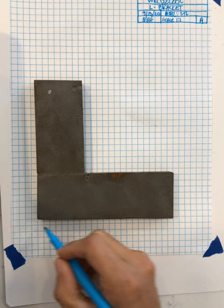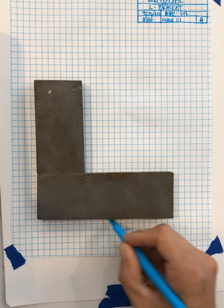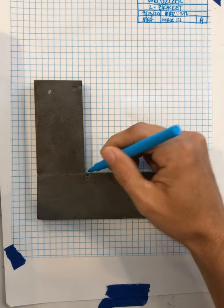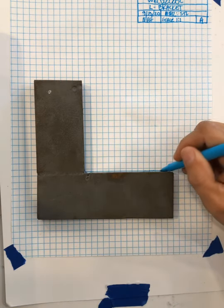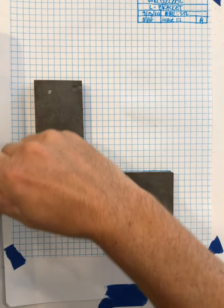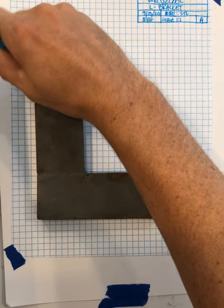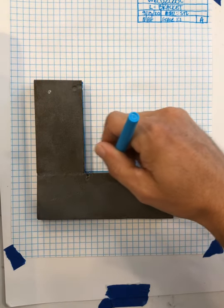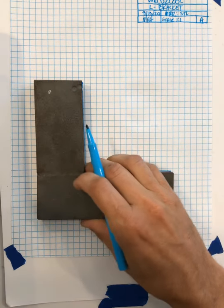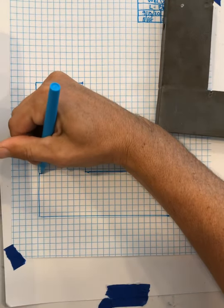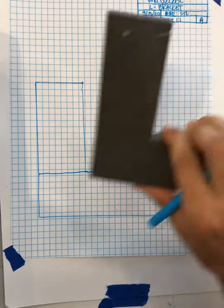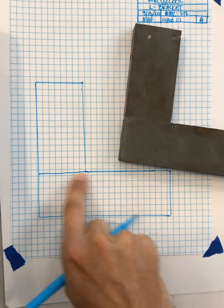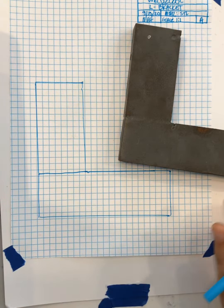I'm just gonna go ahead and start to outline this. These are going to be solid object lines. Obviously it is an object line because we can see the edges. So I'm just gonna go ahead and trace the outside of this really simple component which is in an L shape and it's two pieces even though it was welded. I went ahead and continued that line all the way across.